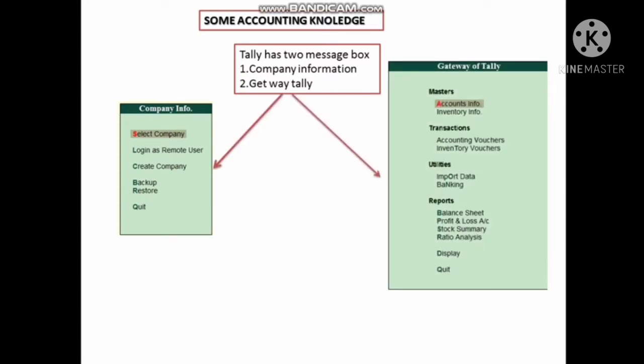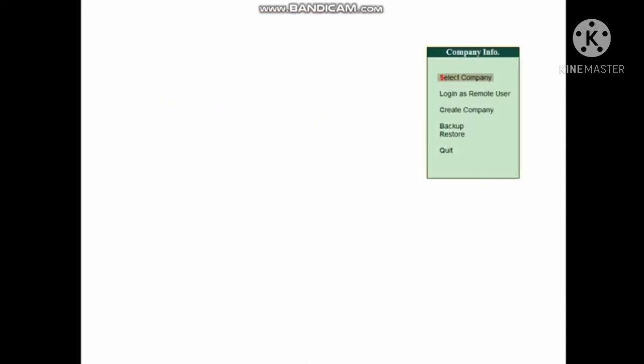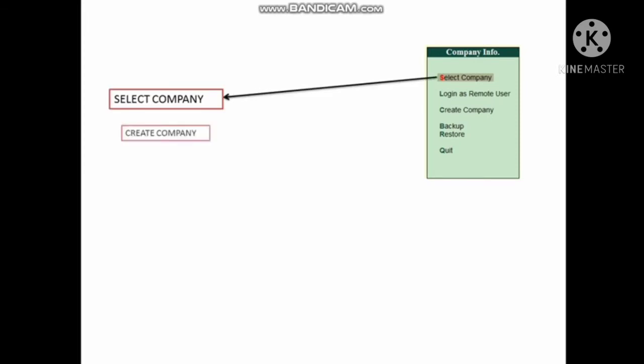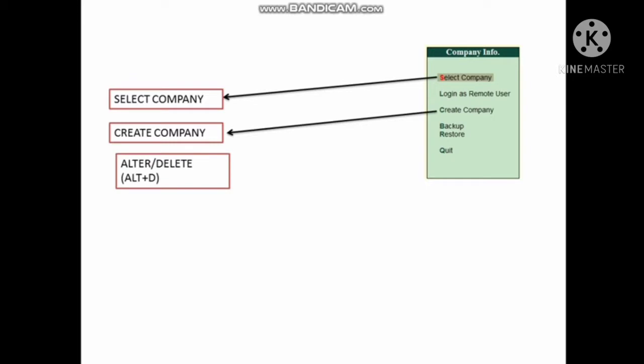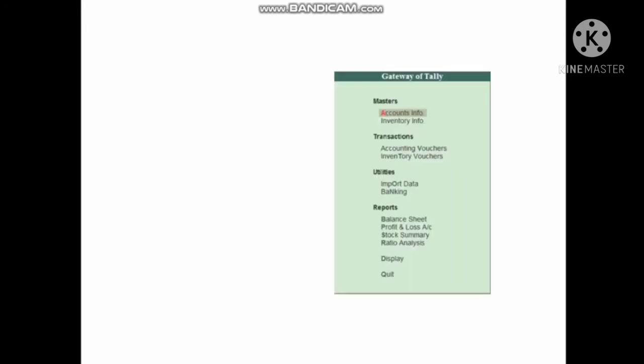Company Information means you press Alt F3. This gives you options: Select Company, Create Company, Alter, and Delete. Alter means change, and to delete you press Alt D.